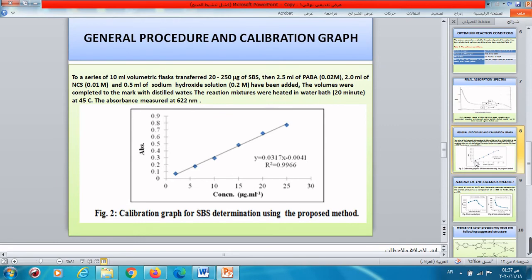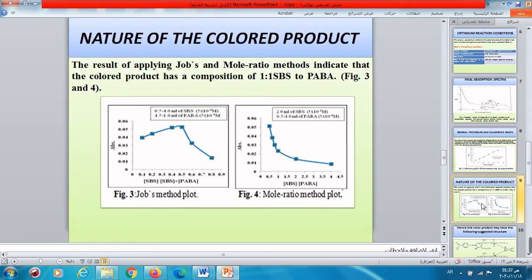Figure 2, the linearity, the relationship between absorbance and concentration. The concentration in microgram per ml. Beer's law is obeyed from 2 to 25 microgram per ml, and the determination coefficient equal to 0.9966.